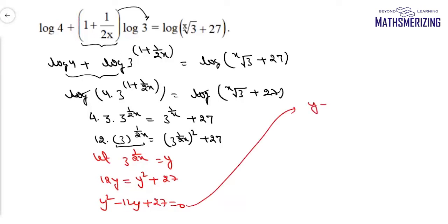I can factorize it as y minus 3 times y minus 9 equals 0. So the value of y is either 3 or 9.